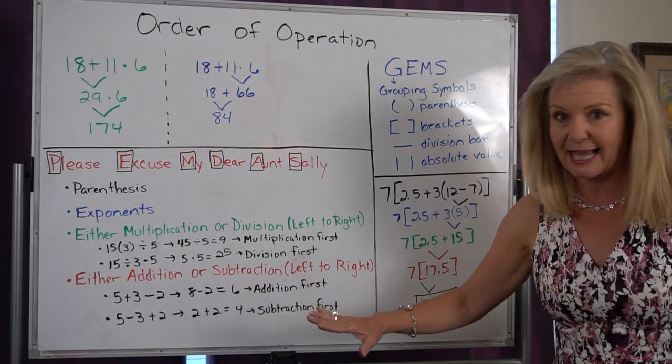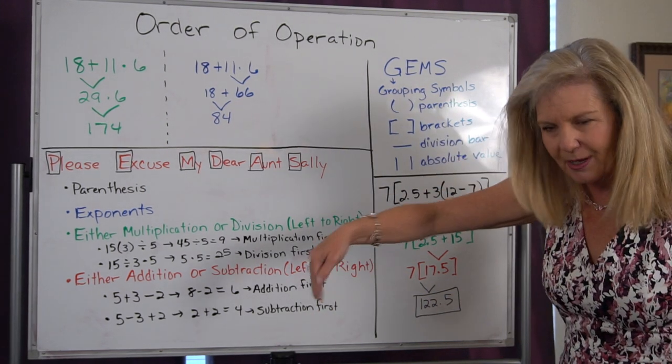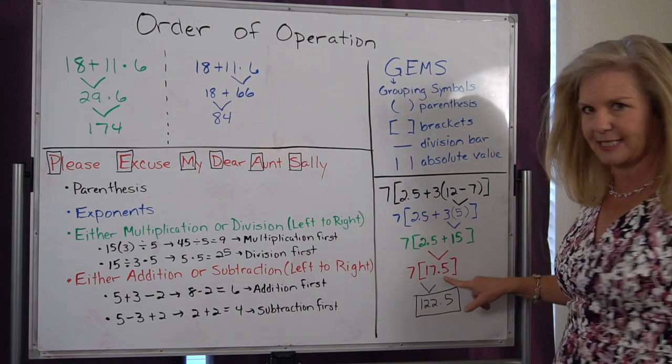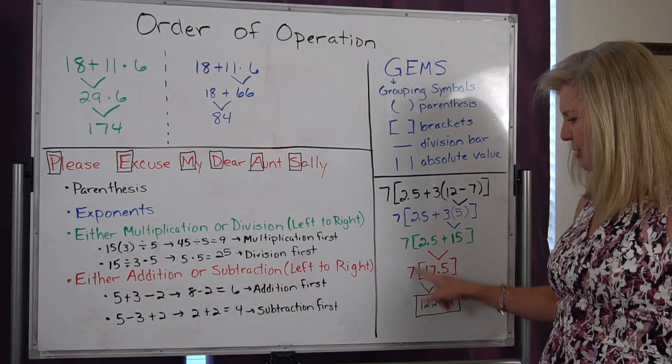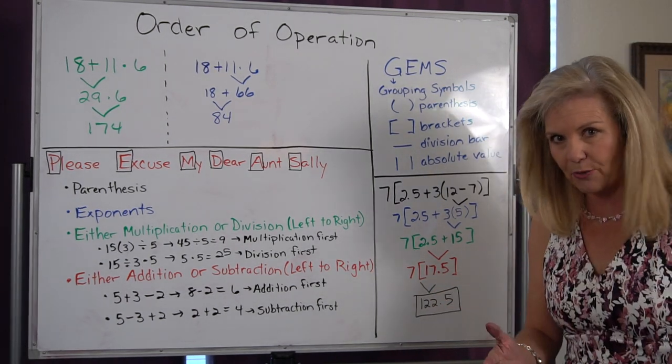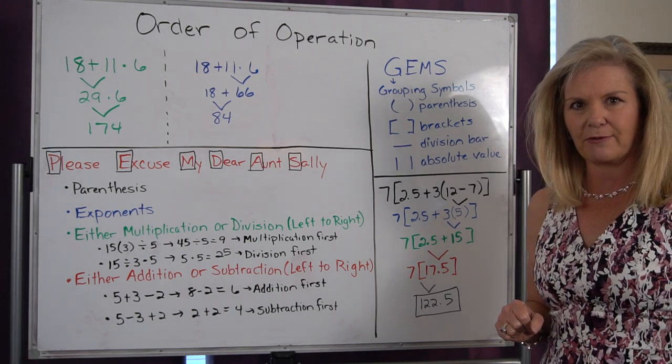Now there's nothing left inside my brackets. Now I can go outside my brackets and I can do 7 times 17.5. Remember, there's no multiplication symbol there. If there's no symbol, you know it's got to be multiplication.